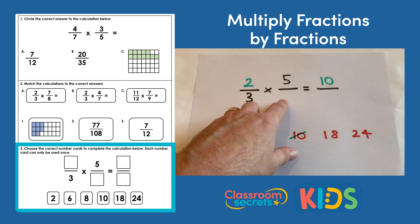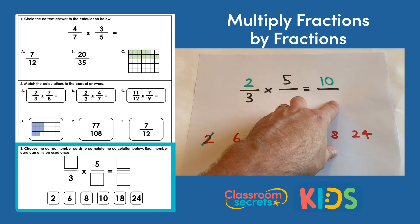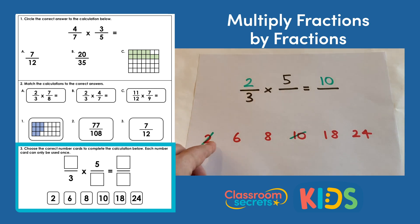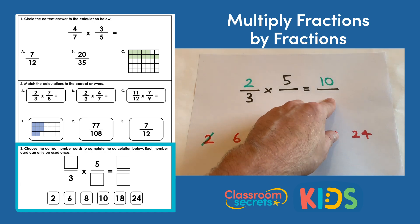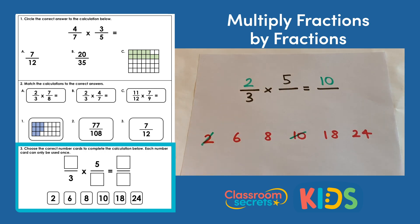Looking at the denominators, it's going to be 3 multiplied by something makes something. So we know that this result here has to be a multiple of 3, so it can't be 8—it's either going to be 6, 18, or 24.